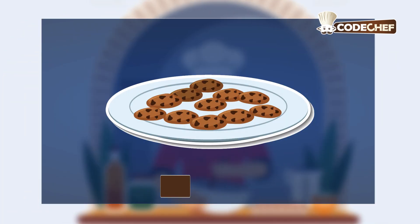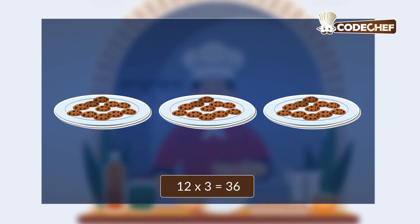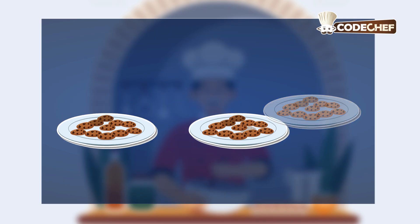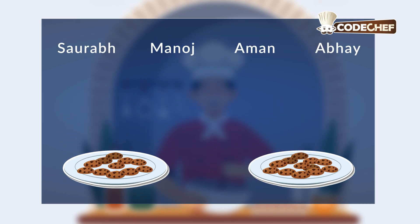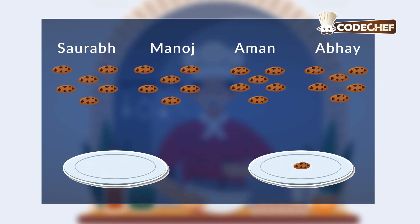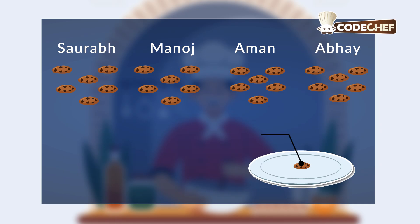Making multiple batches? That's multiplication. Now if you want to share 25 cookies among four friends, floor division tells you how many whole cookies each person gets — each gets six. And the leftover cookie? That's what modulo gives you: the remainder.